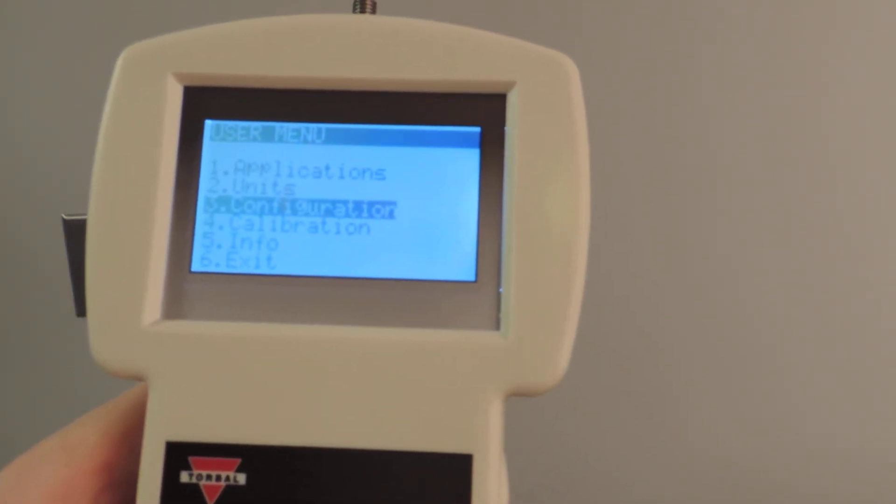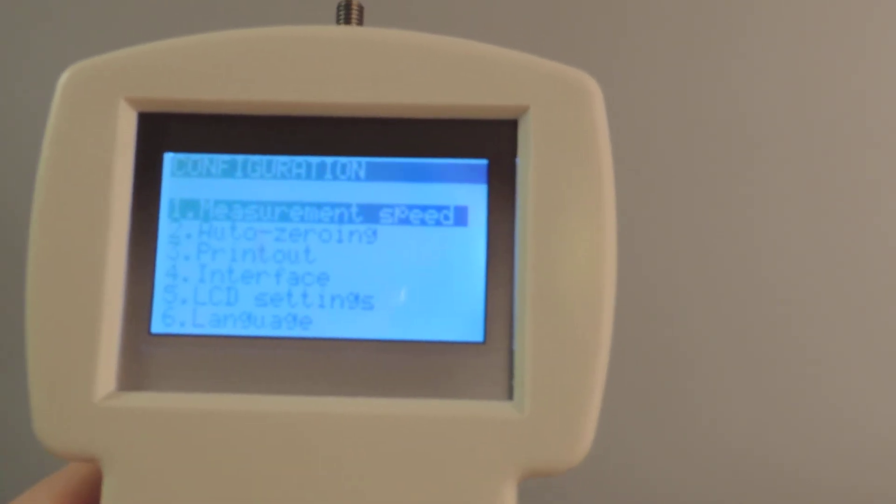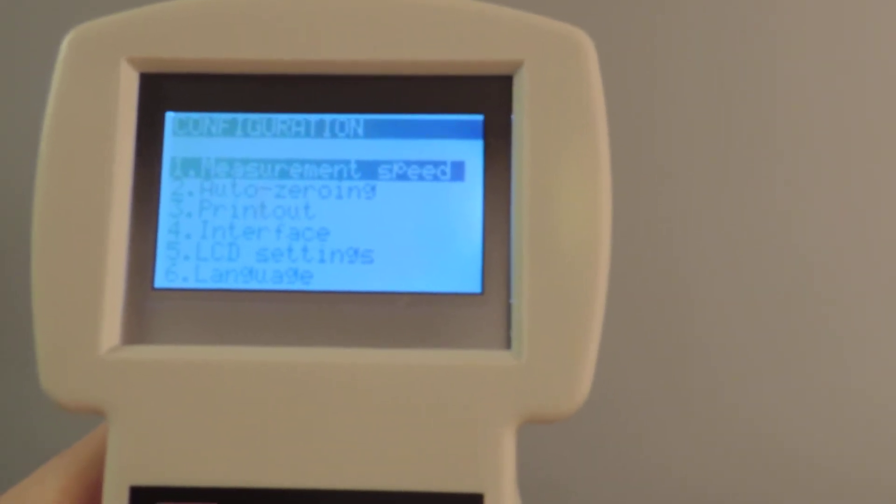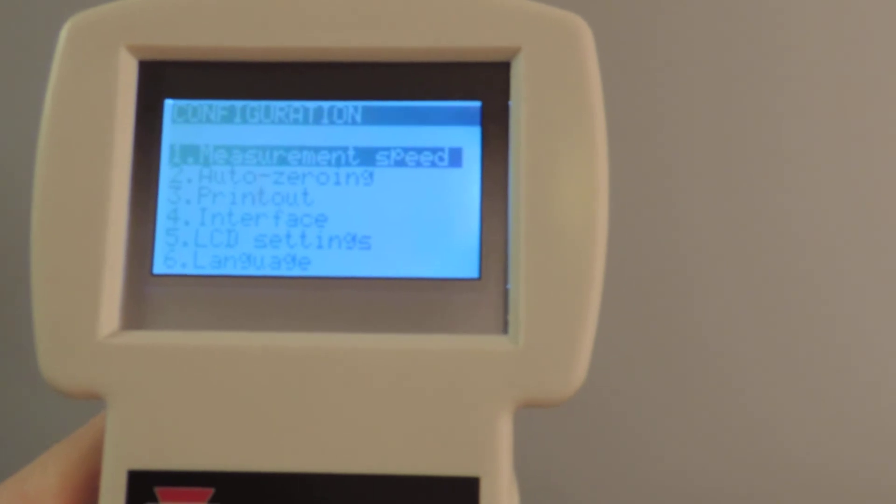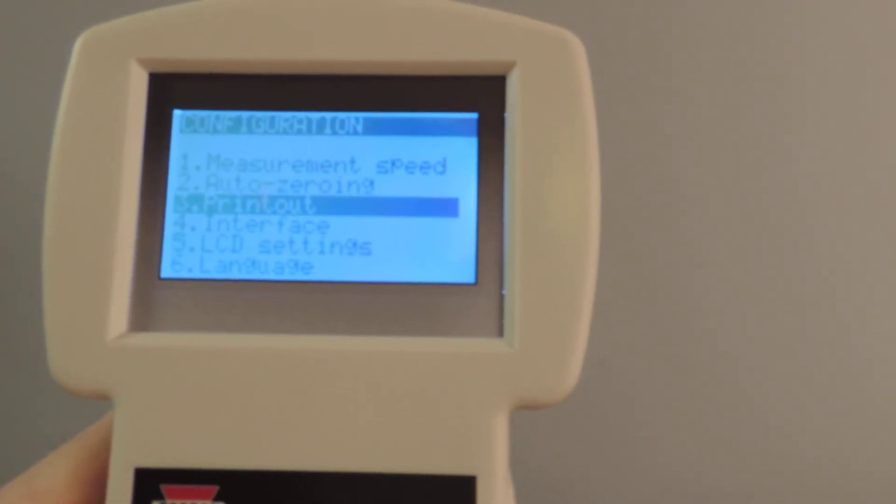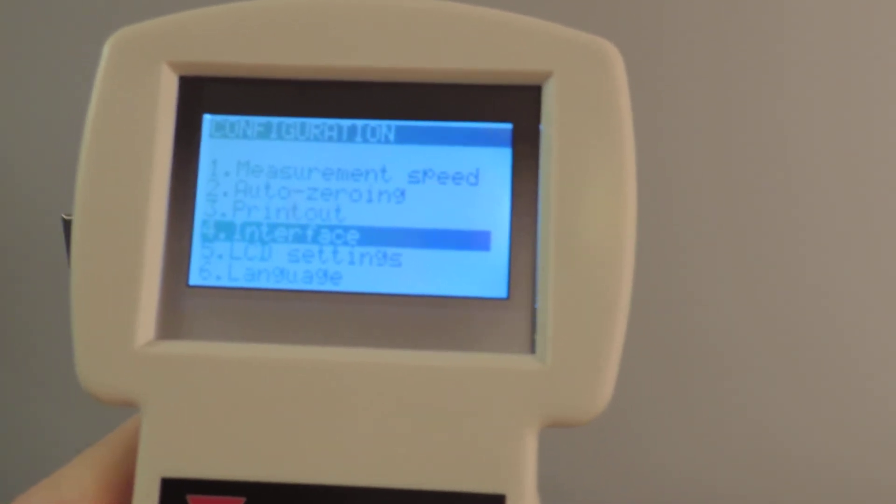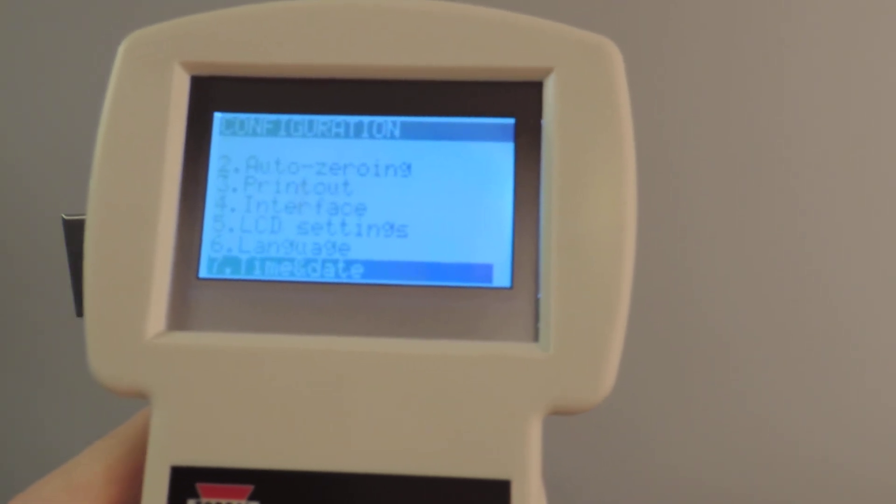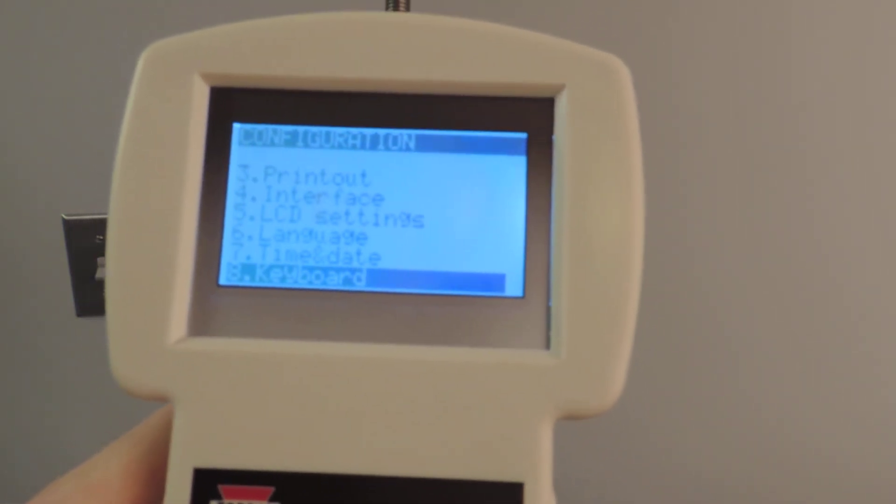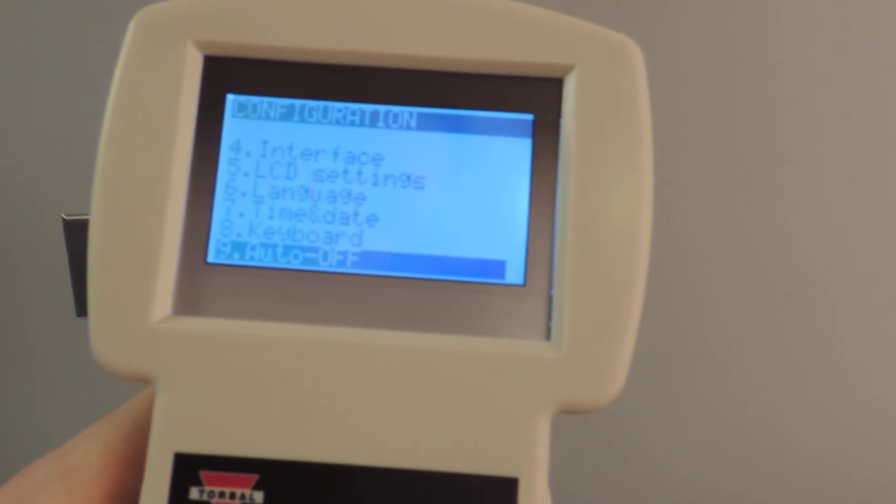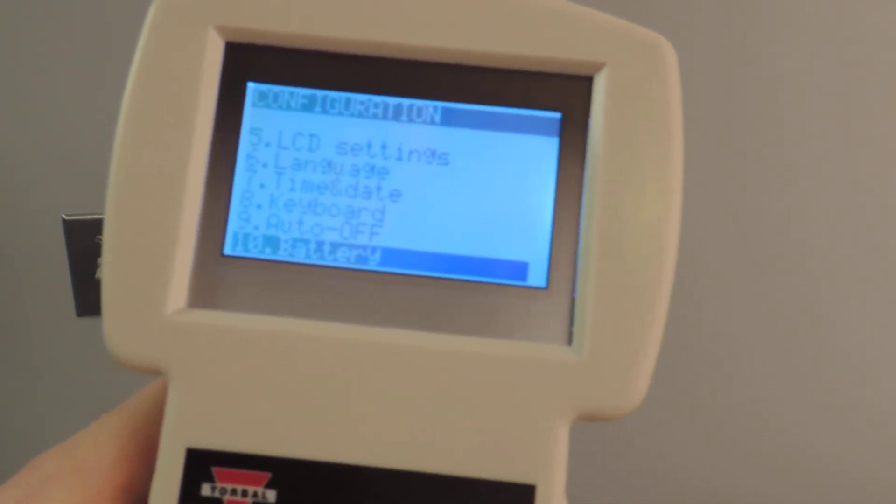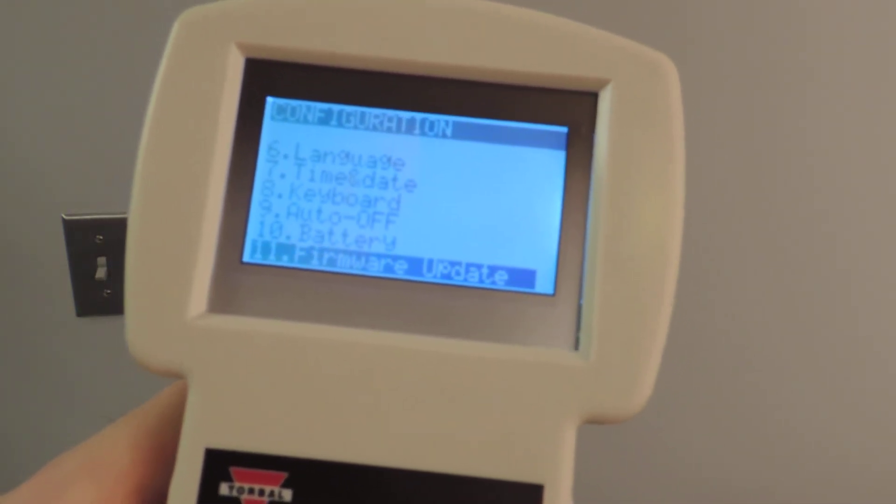If we take a look at the configuration options, you can scroll between measurement speed, auto-zeroing, printouts, interfacing, LCD settings, language, time and date, keyboard options, auto-off, battery options, and firmware updates.